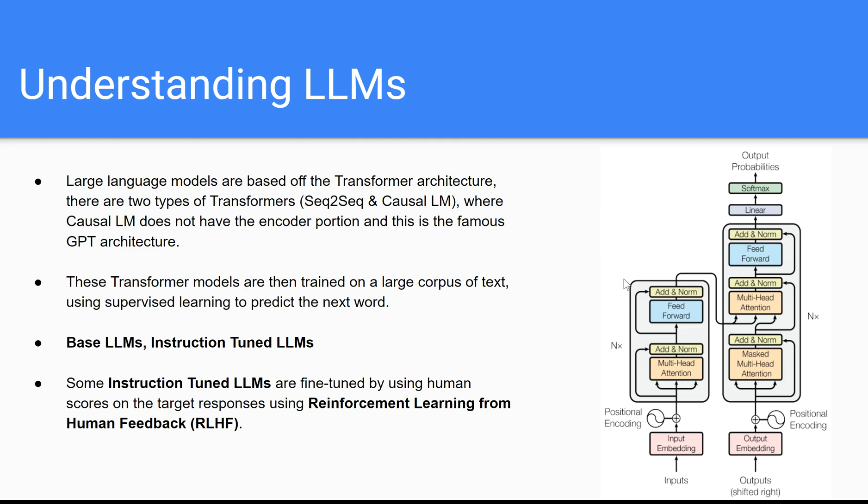You can imagine just taking away this encoder portion right here on the left, taking it out, and then just keeping this decoder portion. And essentially, how it is trained is that this is no longer the output embedding or the outputs right here. The inputs are sent in to the model on this right-hand side. They're embedded, processed by the neural network, and then a probability distribution over tokens, not words, but tokens, which are subwords, is outputted.